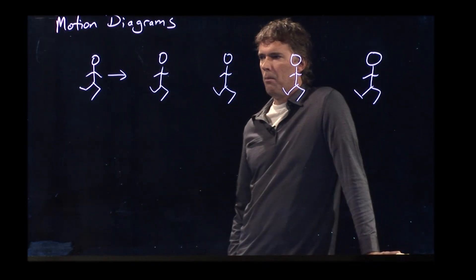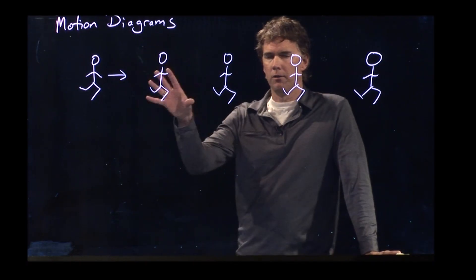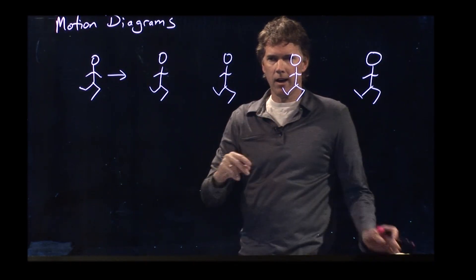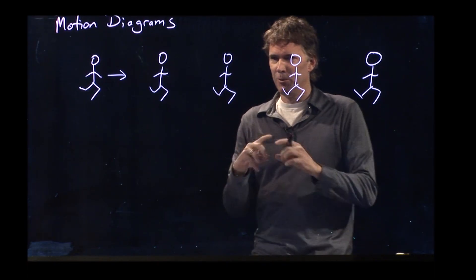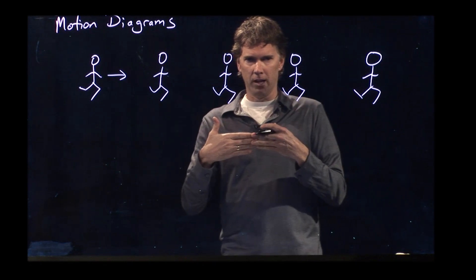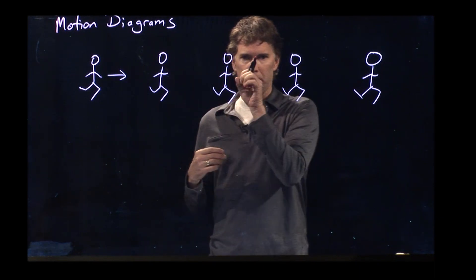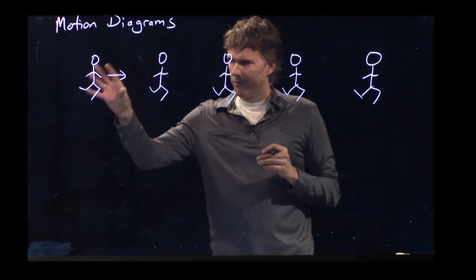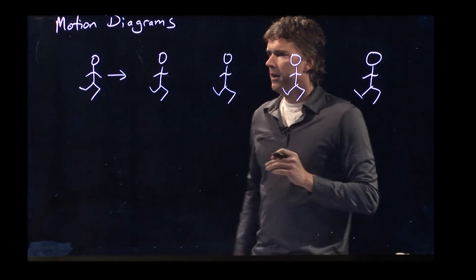This is what a motion diagram looks like — just a snapshot of this person. In the old days, when we used to have film cameras — you guys ever heard of this thing called film? — we used to be able to open the shutter, expose the film for a very long time, and just take strobe pictures as somebody went by. You would get five different shots of them as they moved.